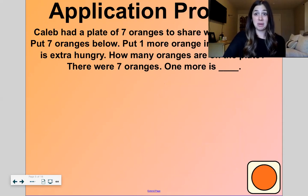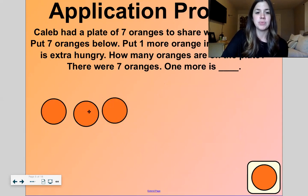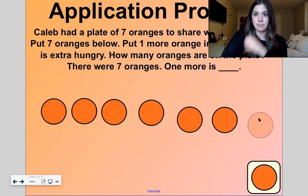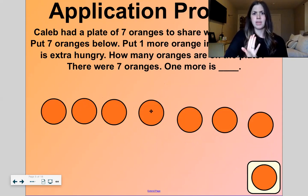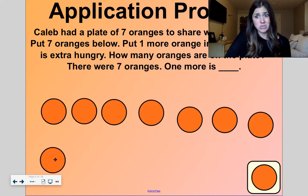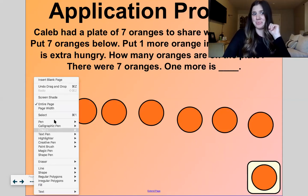Now let's get into our application problem. Caleb had a plate of seven oranges. Oh I like oranges. They're so juicy. Sometimes oranges are a little bitter. Sometimes they're really sweet. Kind of depends on what season you're in right? Okay so we have seven oranges. One, two, three, four, five, six, seven. Let's double check. One, two, three, four, five, six, seven. Always good to double check your work in math right? Put one more orange out in case someone is a little extra hungry. That's really nice right? We had seven. One more is eight.